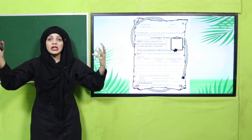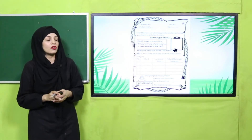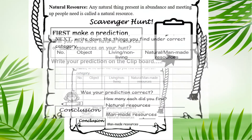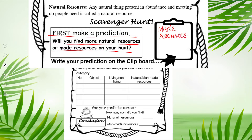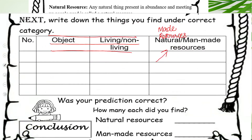This is a scavenger hunt. First, make a prediction: will you find more natural resources or man-made resources? I think we will find more man-made resources. Write your prediction on the clipboard — I've written that I think more man-made things will be found. Then move forward to the next part of the worksheet.